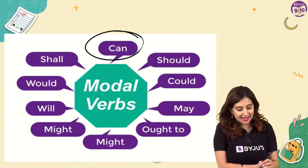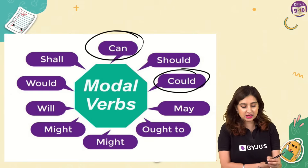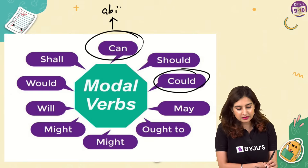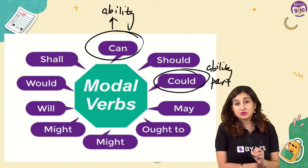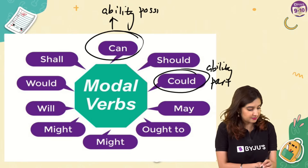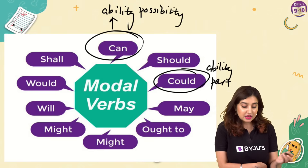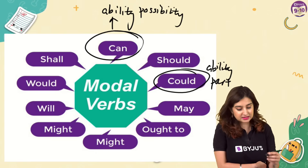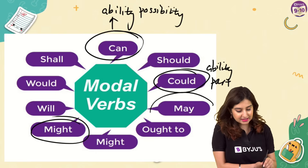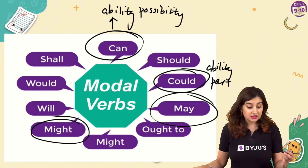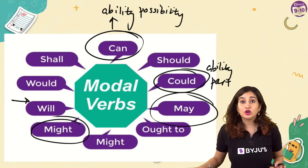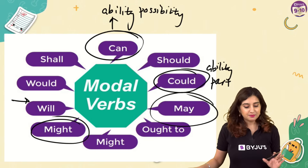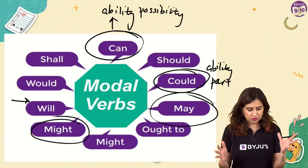Can and could - you can easily tell these relate to ability, and could is ability in the past. Can is sometimes also used for possibility, as are might and may. And there are helping verbs like will, which talk about the future. So you generally know the different things that these modals do.